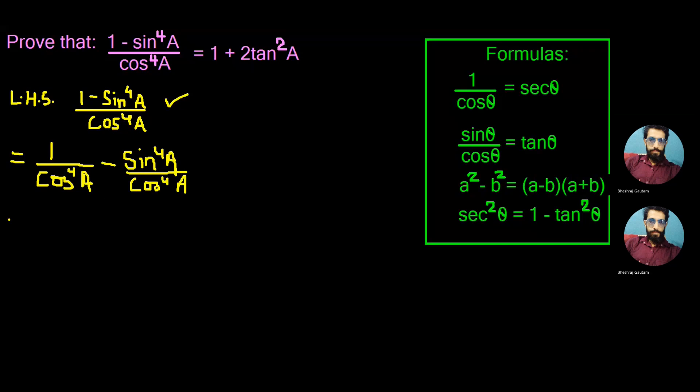From the formula 1 by cos theta equals sec theta, we can write the first part as sec to the power 4A. Using the second formula sin theta by cos theta equals tan theta, we can change the second part to tan power 4A.